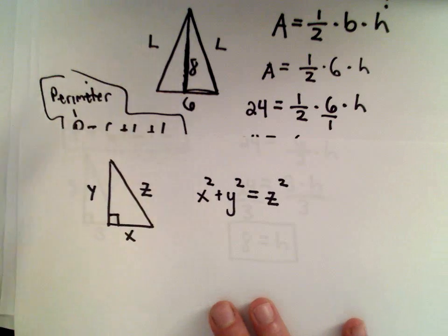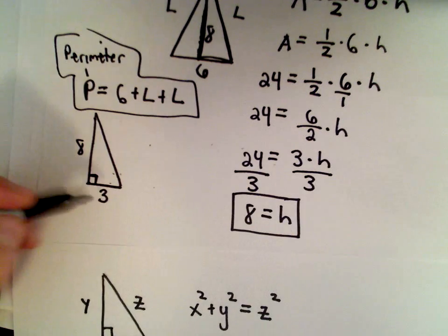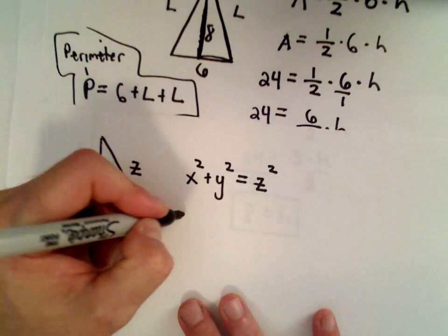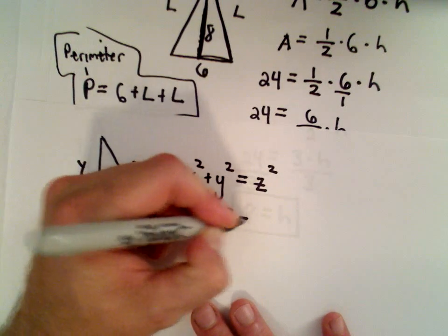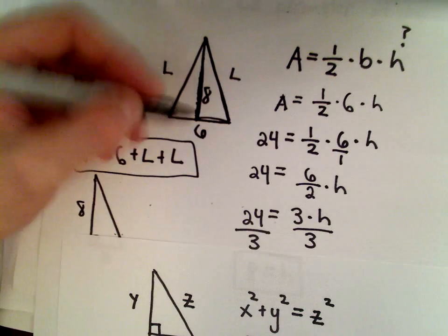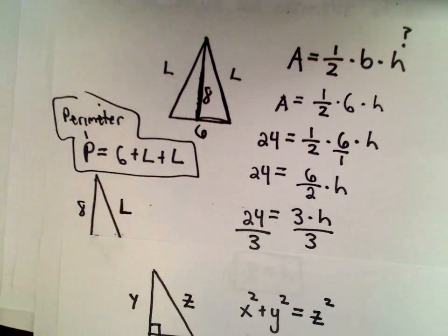So in our example here, I've got a side length of 3 and 8. So that tells me that 3 squared plus 8 squared, that's going to equal this value of L.